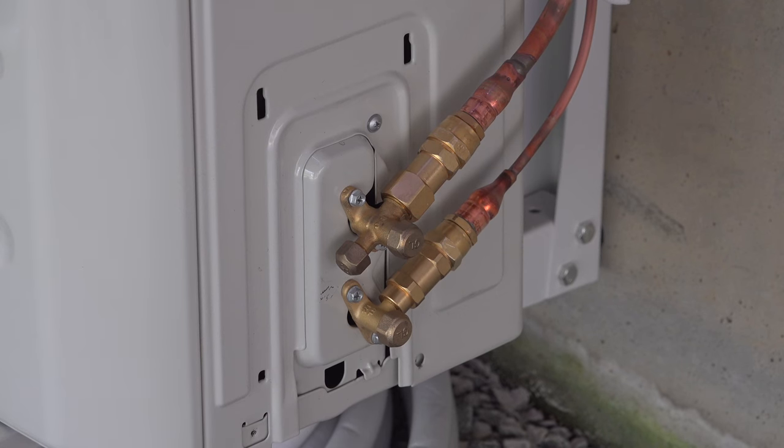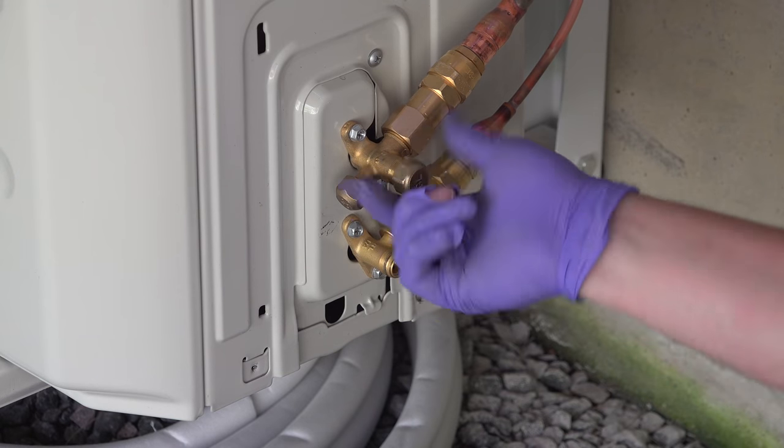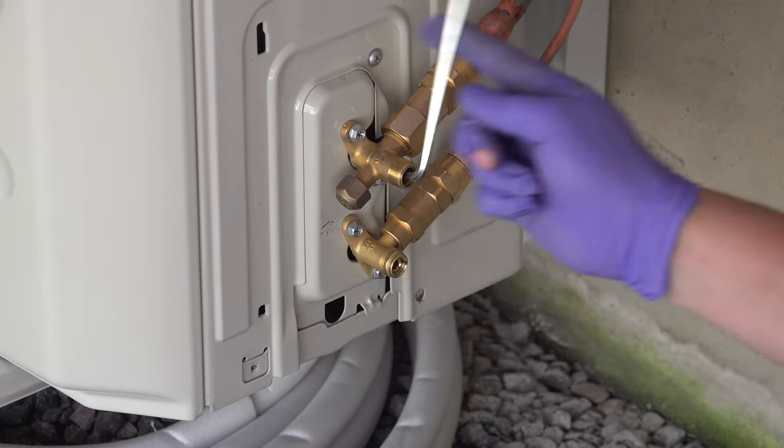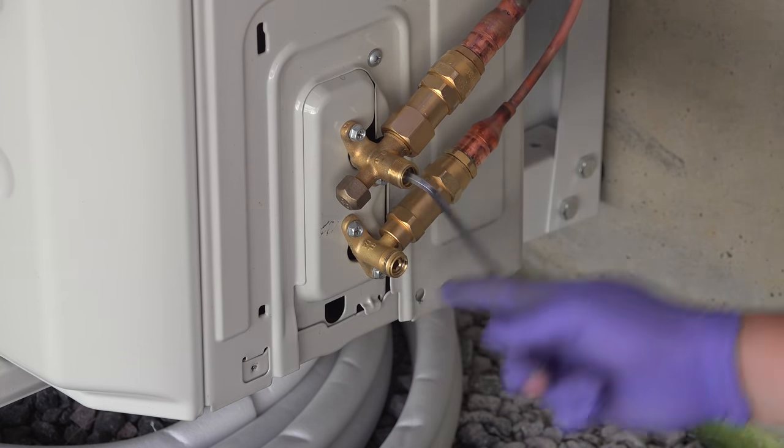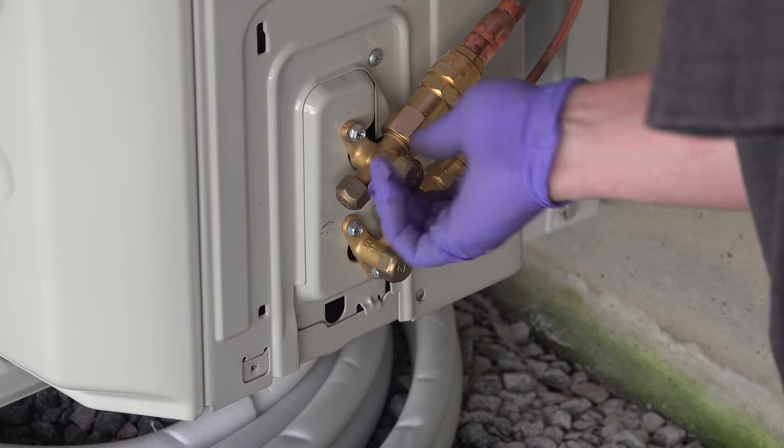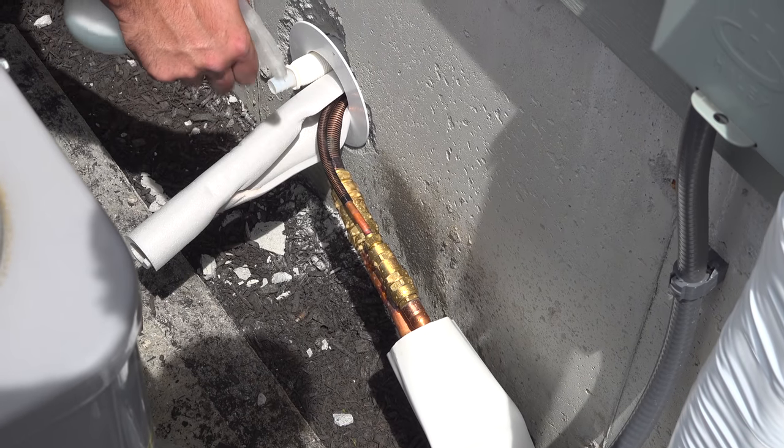But now here's a critical step. You've got to remove those caps because underneath is this Allen screw and you're going to insert the tool that they include in the box and you're going to loosen it all the way until it bottoms out. What you're doing here is opening the valve inside that condenser. And now all that Freon that was pre-filled can flow completely through the system. And make sure you leave those valves open but you want to replace the caps and screw them down tightly.